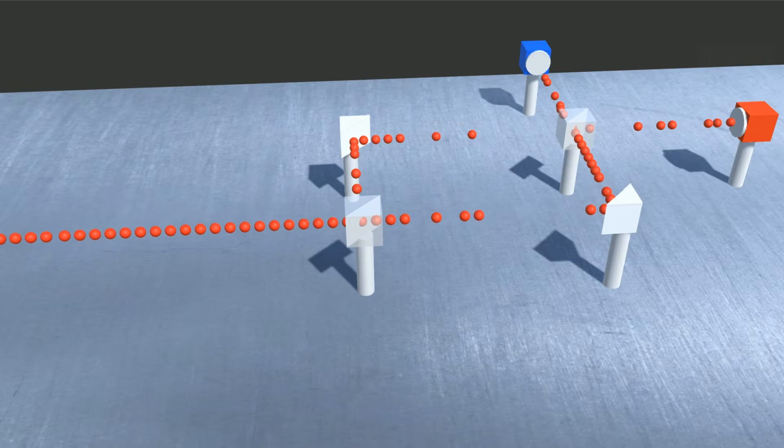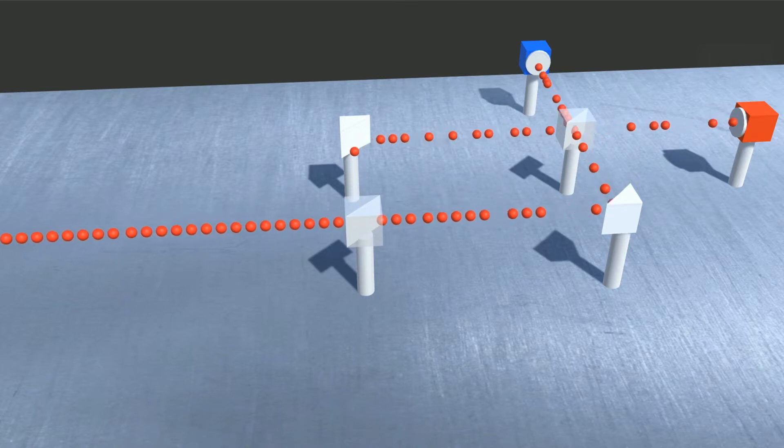If light is made of particles, why would this happen? Each particle should go down a path and just get randomly split again at the final beam splitter.